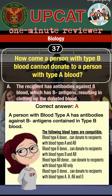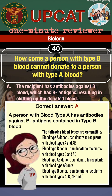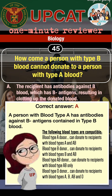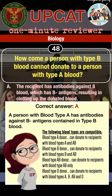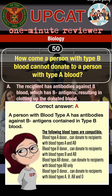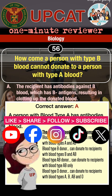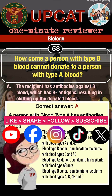Here's a quick and handy reference on blood type compatibilities. Blood type A donor can donate to recipients with blood types A and AB. Blood type B donor can donate to recipients with blood types B and AB. Blood type AB donor can donate to recipients with blood type AB only. Blood type O donor can donate to recipients with blood types A, B, and O. O is the universal donor.